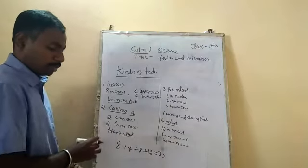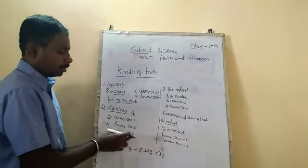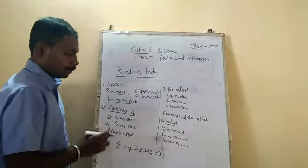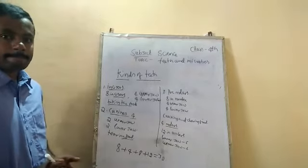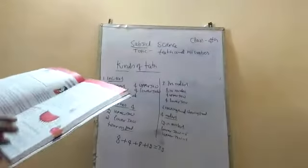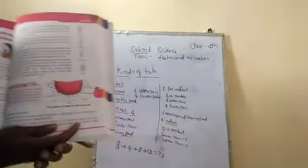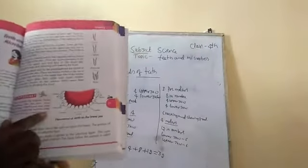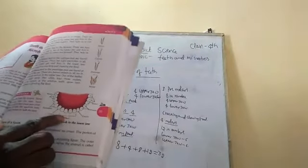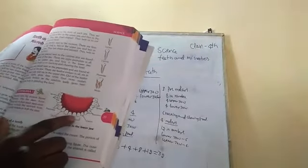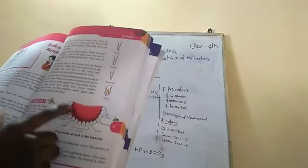In the textbook, they have given the position of the different kinds of teeth. Let us look at it. They have shown the lower jaw with the placement of teeth.